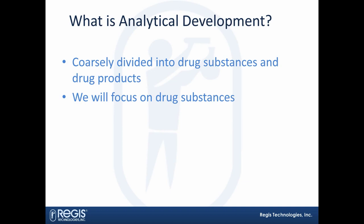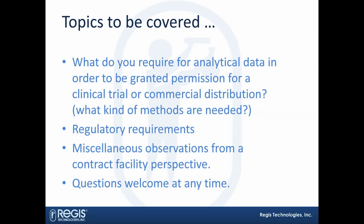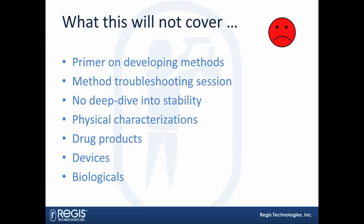Analytical development can be coarsely divided into two categories: drug substances and drug products — we'll be talking about drug substances today. Topics to be covered include what analytical data you require to be granted permission for a clinical trial or commercial distribution, regulatory requirements, and miscellaneous observations from a contract manufacturing perspective. I'll intersperse comments about things our team has encountered doing analytical development for customers. Unfortunately, because of the time, we can't get into a big primer on method development or troubleshooting.